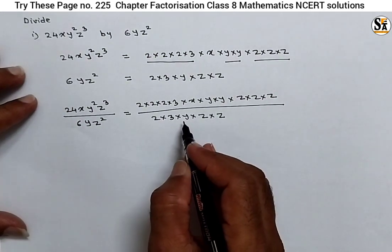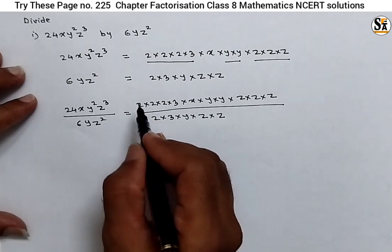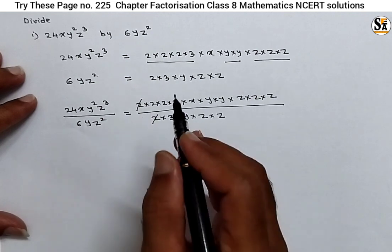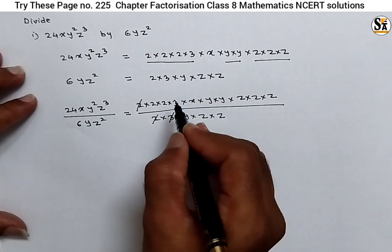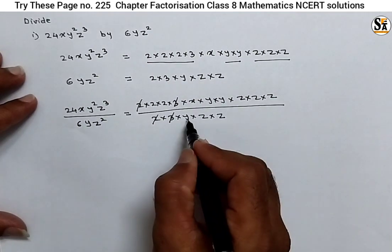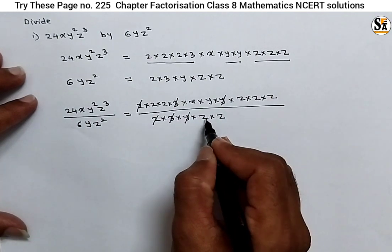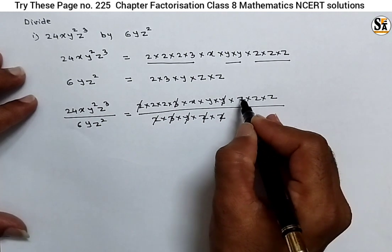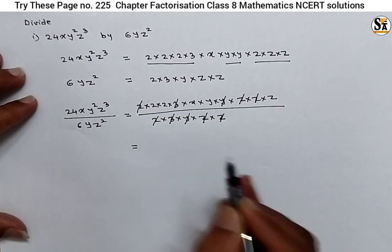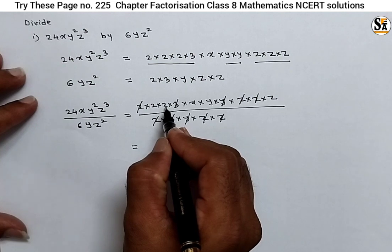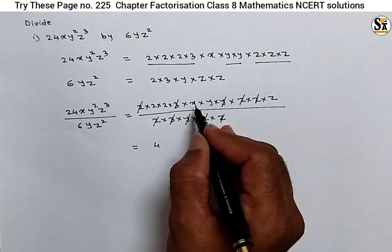Our ultimate aim is to cancel the common factors. Which are the common factors? This 2 is common — cancel this 2. This 3 is also a common factor — cancel this 3. This y is also common — cancel this y. Now there are two z's in the denominator; both z's are cancelled by two z's from the numerator.